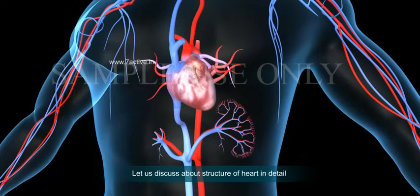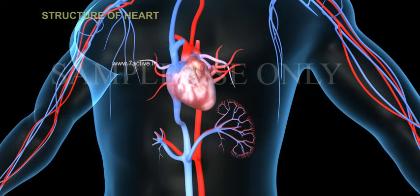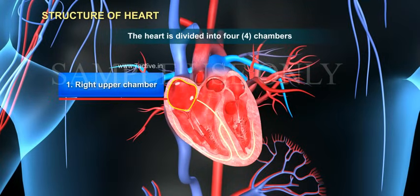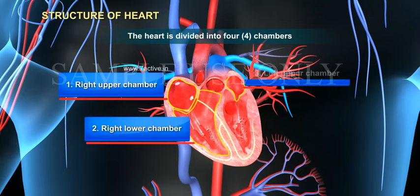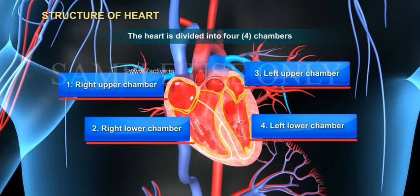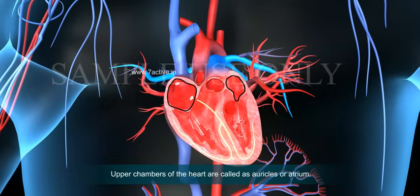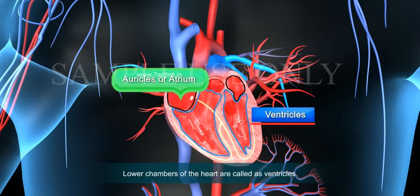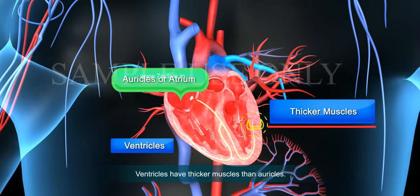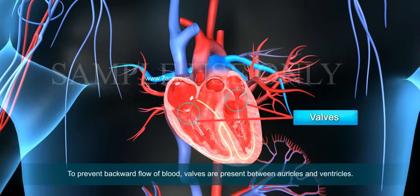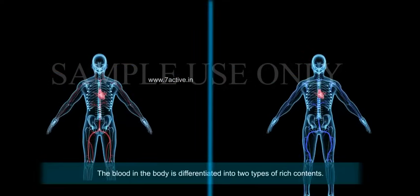The heart is divided into four chambers: one, right upper chamber; two, right lower chamber; three, left upper chamber; four, left lower chamber. Upper chambers of the heart are called auricles or atrium. Lower chambers are called ventricles, which have thicker muscles than auricles. To prevent backward flow of blood, valves are present between auricles and ventricles.